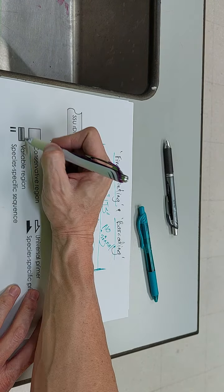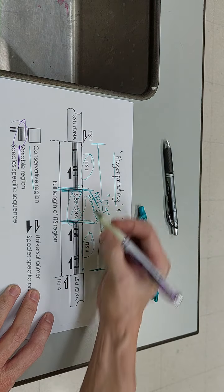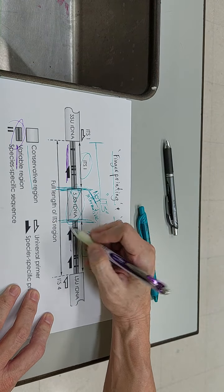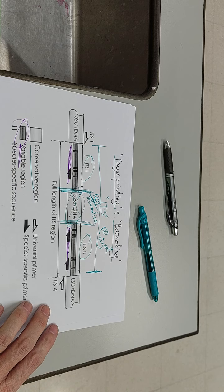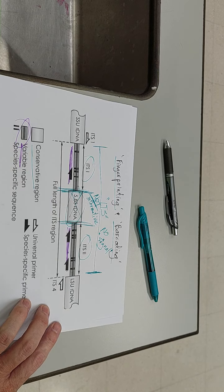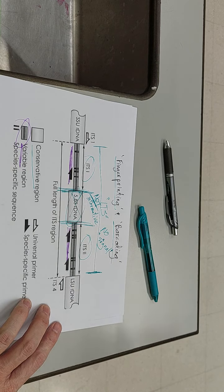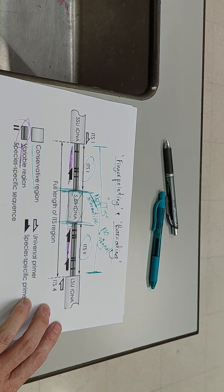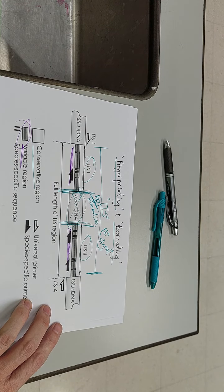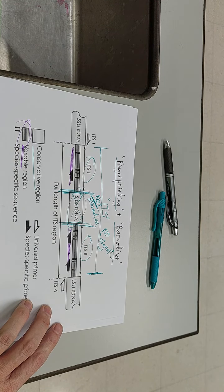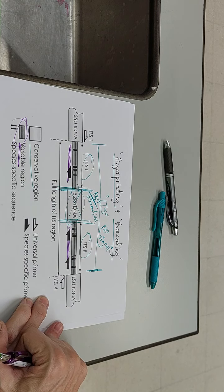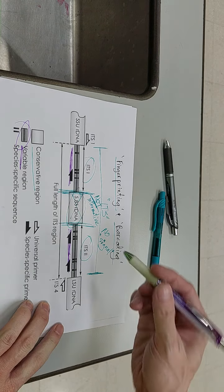Because what we want to do is we want to look at these regions. So these regions as it says here are what we call variable. So ITS1, ITS2, these are what are called variable regions. So they have phylogenetic signal and they are going to evolve, they're going to mutate, and they're not under any constraints.